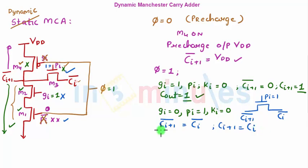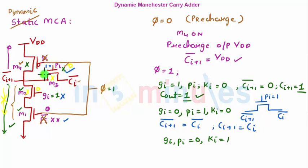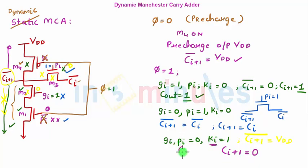Last case: KI equals one, so generate and propagate are both zero. Both M2 and M3 are NMOS with zero inputs so both are off — no path to ground, and the pass transistor is also off. The circuit holds the pre-charged value, so CI+1 bar equals VDD, meaning CI+1 equals zero. When K is one we want Cout to be zero, so functionality is achieved.